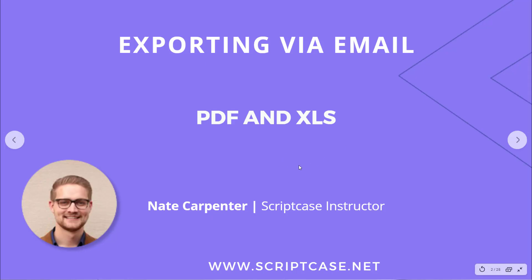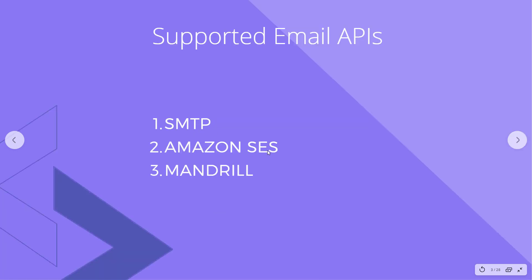Hi everyone, welcome to another Scriptcase tutorial. This is part one of a two-part series. We're going to look at some different ways to export data via email in Scriptcase. This first video deals with the two built-in ways: PDF and XLS. There are three supported APIs: SMTP, Amazon SES, and Mandrill. We're going to focus on SMTP but we'll also look at how to set up Amazon SES.